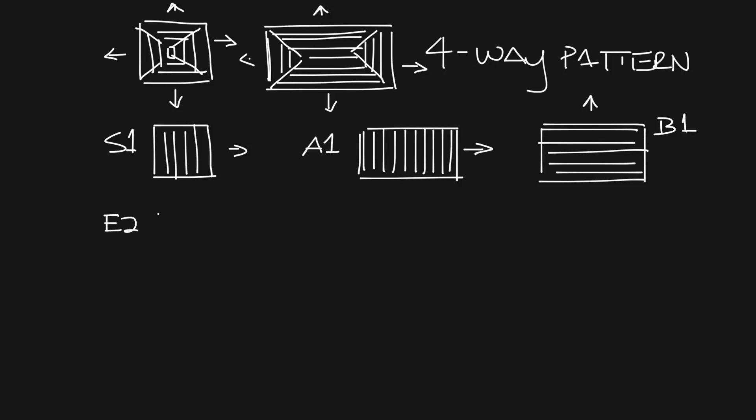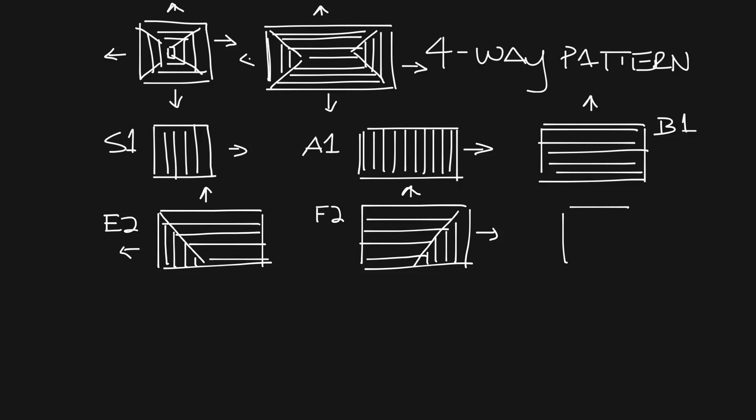For two-way patterns, you can get the E2, which looks like this, and your airflow would come out here and here. Or the F2, which is basically the opposite of that. Or you can get the G2, which is the square version of this.